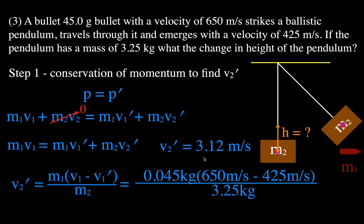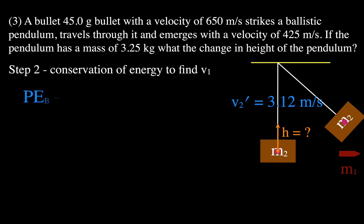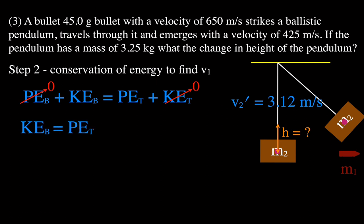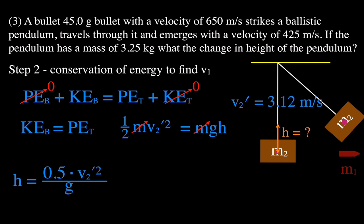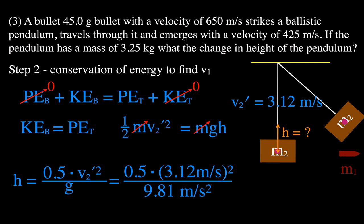Just like in the previous example, now that we know the pendulum's velocity we use conservation of energy. Kinetic energy at the bottom equals potential energy at the top. The masses cancel, giving h equals one-half v squared divided by g. Plugging in the velocity of 3.12 m/s found on the previous slide and g = 9.81 m/s², we get that the pendulum moves up exactly 0.5 meters.